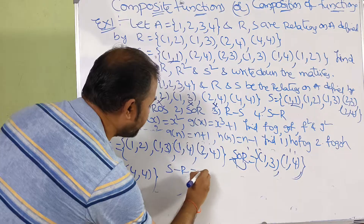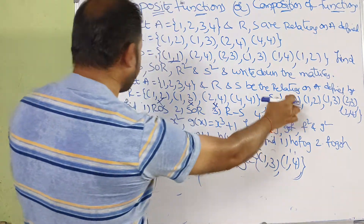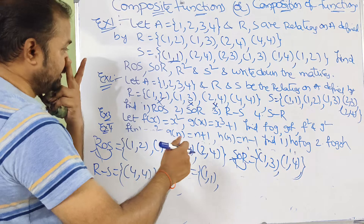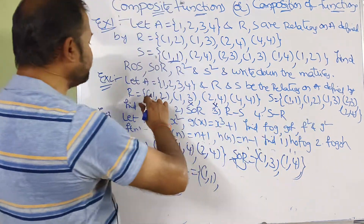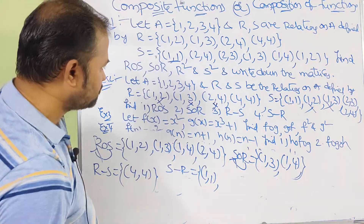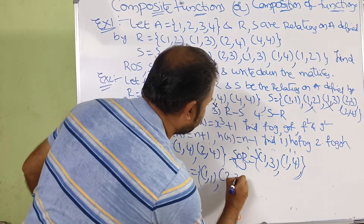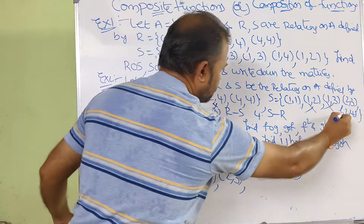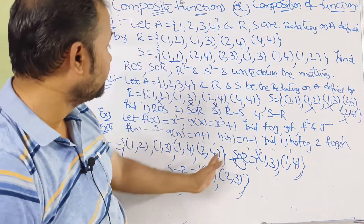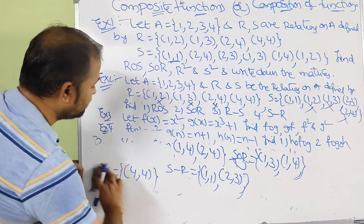Likewise compute S−R. S−R contains pairs present in S but not in R. (1,1) — present only in S, keep. (1,2) — present in R also, cancel. (1,3) — present in R also, cancel. (2,3) — present only in S, keep. (2,4) — present in R also, cancel. So S−R = {(1,1), (2,3)}. This operation is called the difference. Now let us see the next example.